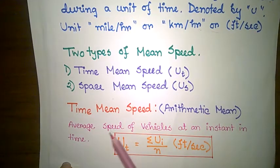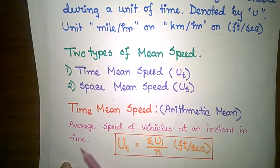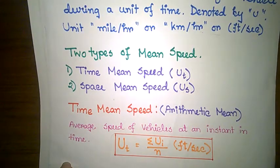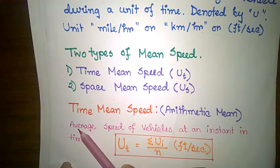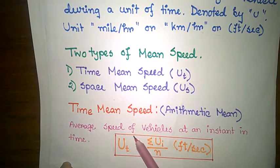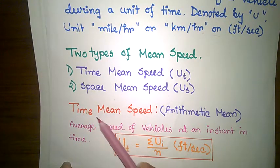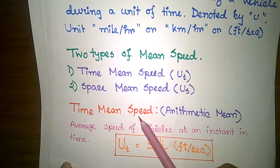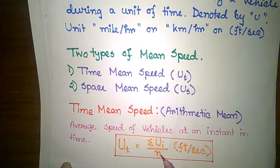This is the average speed of vehicles at an instant in time. This is called time-mean speed. The formula for time-mean speed is the summation of ui divided by n.